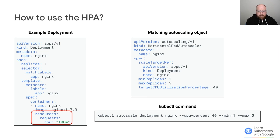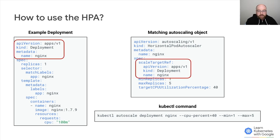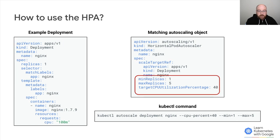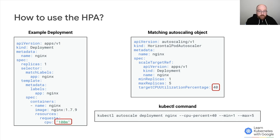Now let's move over to the associated Horizontal Pod Autoscaler object. The scaleTargetRef describes the exact object that it should target — this matches the API version, kind, and name. Moving on to the next part of the spec, you can see we've defined the minimum and max number of replicas we wish to establish, along with the target average CPU utilization. This value means we want to scale the number of pods to the point where their average CPU is 40 percent of their request — so 40 percent of our requested 100 millicores, which would be 40 millicores.